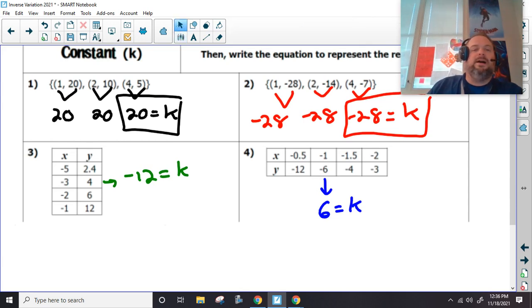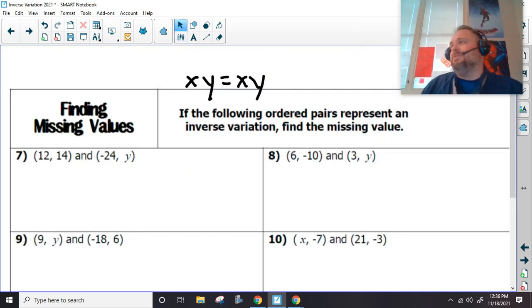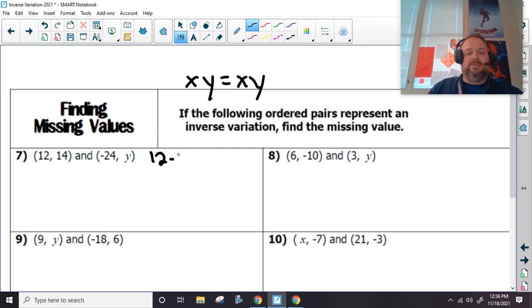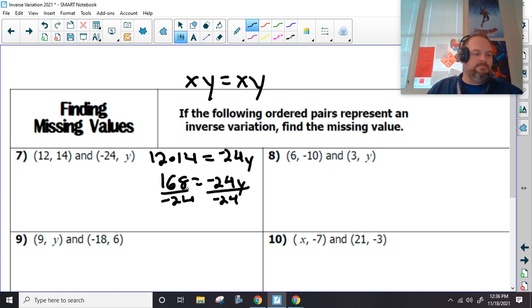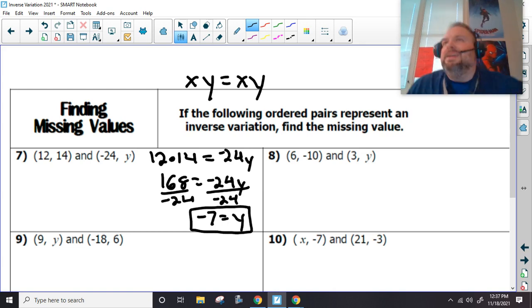All right, so finding missing values. I would set it up as xy equals xy. Okay, very very easy. I'm going to multiply 12 times 14 and set that equal to negative 24 times y. And all we have to do is just do math. So 12 times 14 is 168. Wow, negative 7 equals y. All right, we're just looking for that missing value.